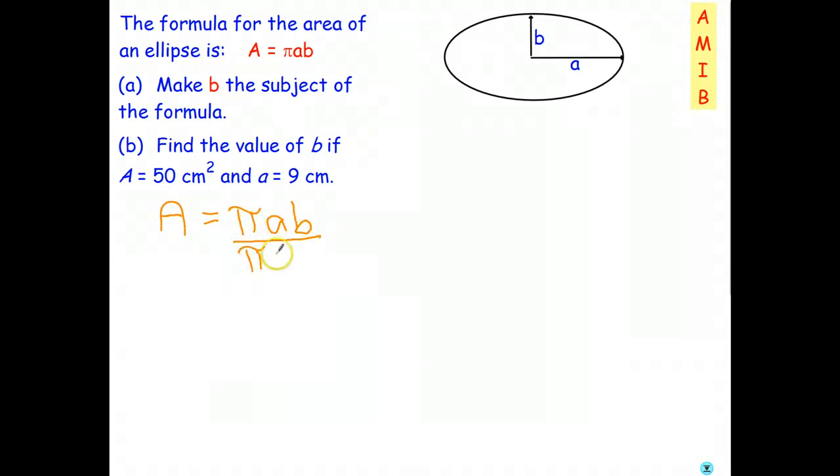Because we're just multiplying all three of them, I can divide both sides by pi A. So I don't need to divide by pi first and then by A, we can divide by the product pi A. Those divide out. That leaves B, which I'll write on this side.